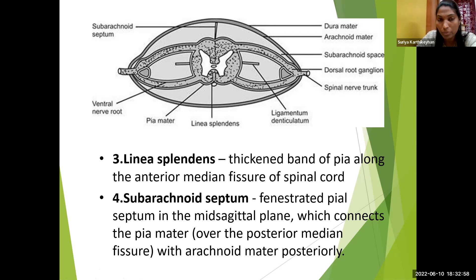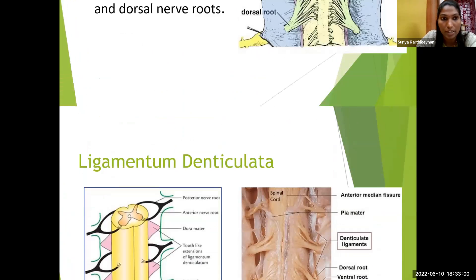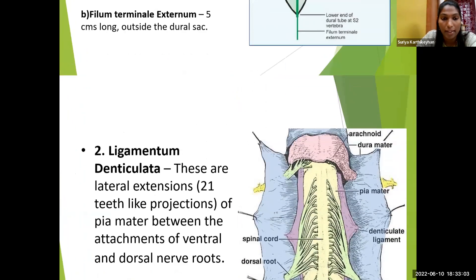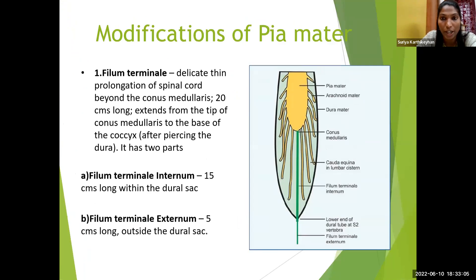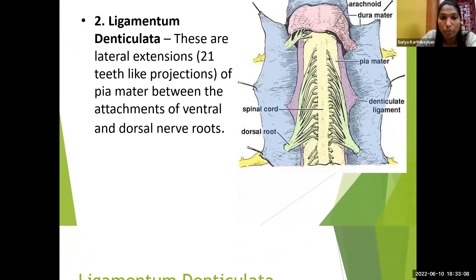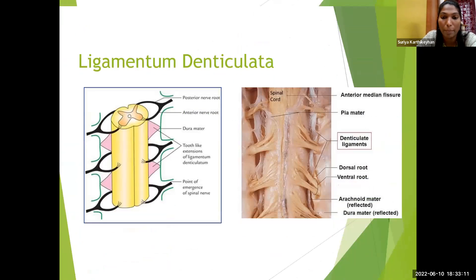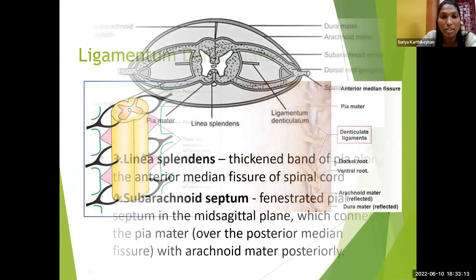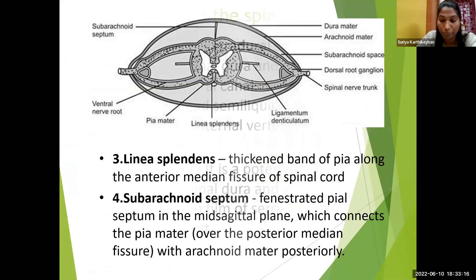The four modifications of pia mater are: filum terminale, ligamentum denticulatum, linea splendens, and the subarachnoid septum.